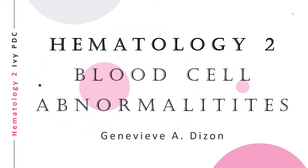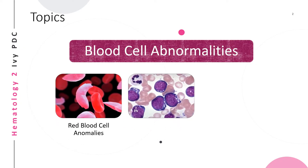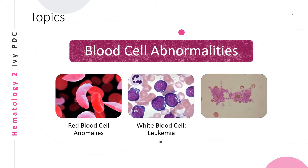Hello everyone, this video is about Hematology 2, where we will be discussing abnormalities about the blood cells. Blood cells include red blood cells, white blood cells, and platelets, but in this video we will only be talking about the white blood cell abnormalities and disorders.